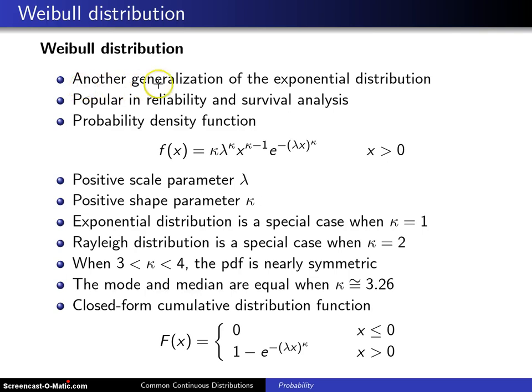The Weibull distribution is another generalization of the exponential distribution. We encountered one of these before. The gamma distribution is a generalization of the exponential, which is to say the exponential is a special case of the gamma when kappa is equal to 1. The Weibull is very popular in reliability and survival analysis, and I'll indicate why at the bottom of this slide.